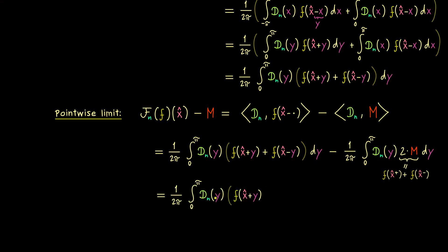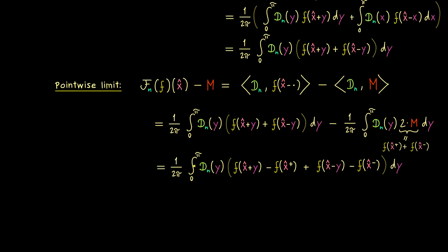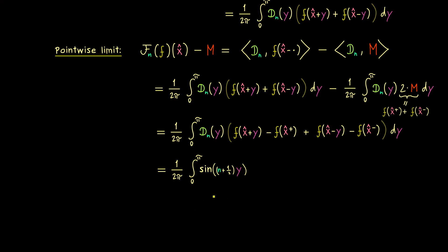And there it's already useful to put f of x hat plus y together with f of x hat plus. Hence we have the difference of that part plus the difference of the minus parts. So it already looks quite nice and there the only thing missing is just the definition of our Dirichlet kernel. And there as you might remember from before the numerator was given as sine of (n + 1/2) times y. And moreover the denominator was quite simple because it was just given as sine of 1/2 y.